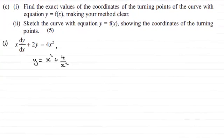Hi there. Now if you watched part A and B of this particular question, you'd know that we were given this differential equation here, x dy/dx plus 2y equals 4x squared, and asked to solve it. And we came up with this solution here, y equals x squared plus 4 over x squared, given particular boundary conditions.